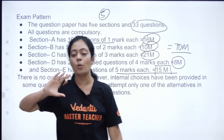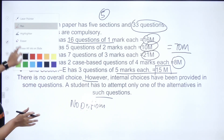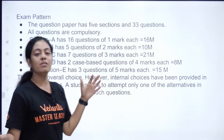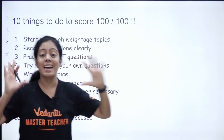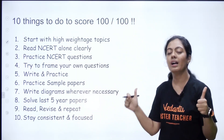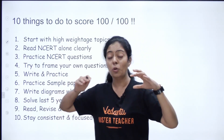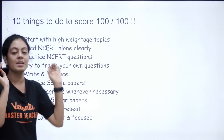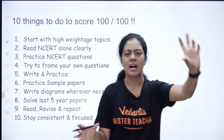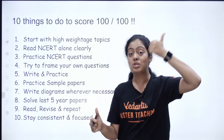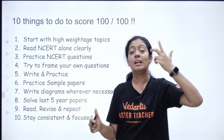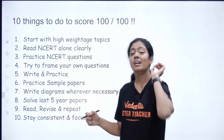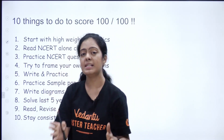Once you understand the pattern, preparing becomes easy. Now, 10 things to do to score 100 out of 100 — simple things that everyone can follow. You need not be super intelligent. Just follow these 10 steps sincerely. First: start with high-weightage topics — Genetics, Evolution, Reproduction, Biotechnology. These are the challenging but most important topics, so start with them first.